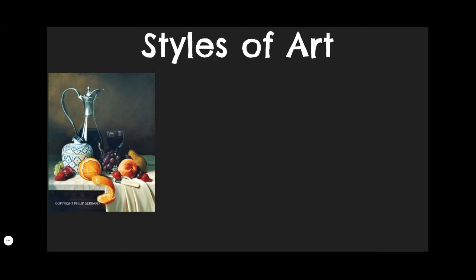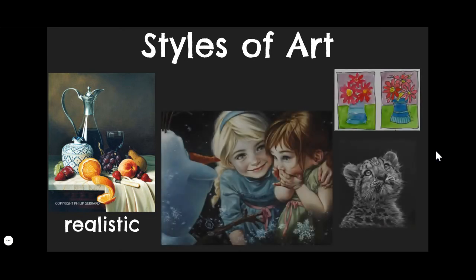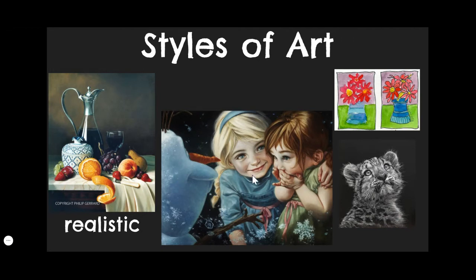The first one we're going to talk about is realistic, because this is the easiest one to understand and remember. Realistic art means it looks real — it's got the word in it. This is a painting right here, but it obviously looks very real. But what you need to understand about realistic art is that it doesn't have to be that perfect. You can see Olaf here, and that's probably meant to be a young Anna and Elsa, but it looks real. It's not entirely real because we don't see snowflakes this big, but it looks pretty real.